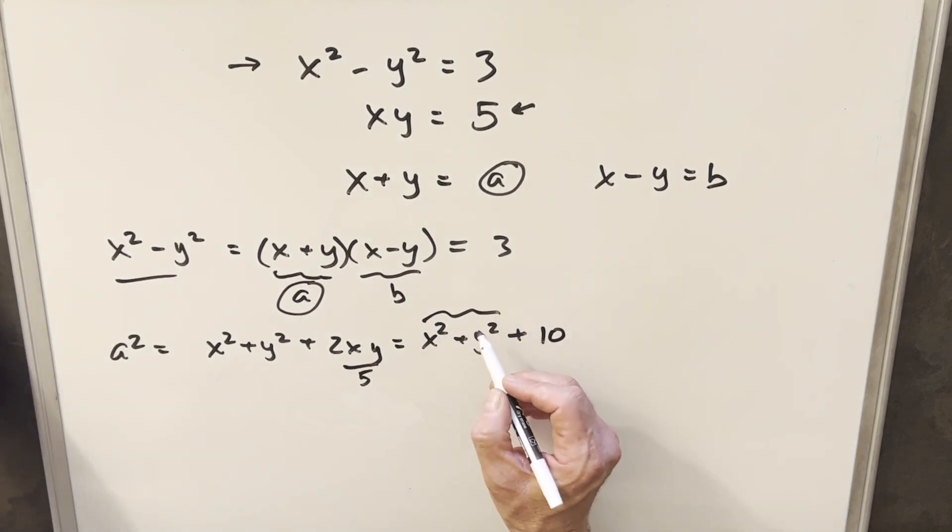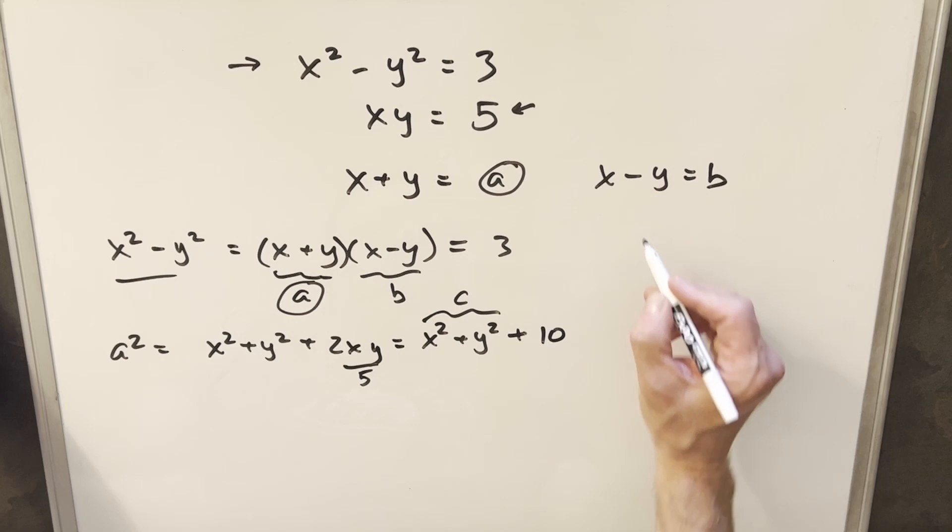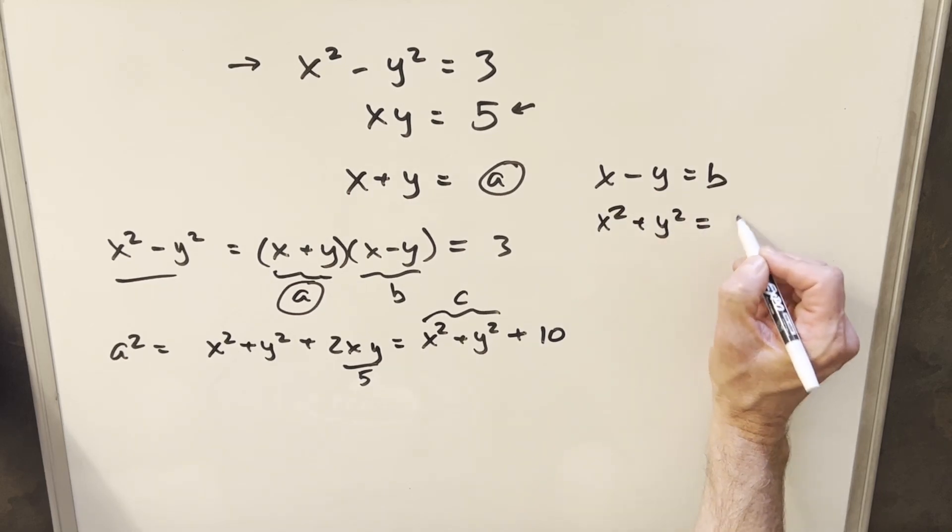And I think I'm going to create just one more label. We'll call x squared plus y squared equal to c. So I'm just going to keep that right here as another variable.